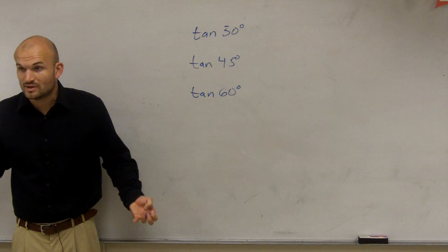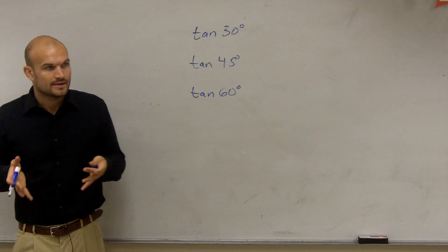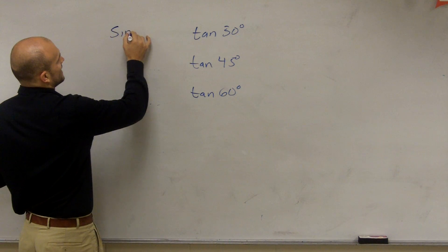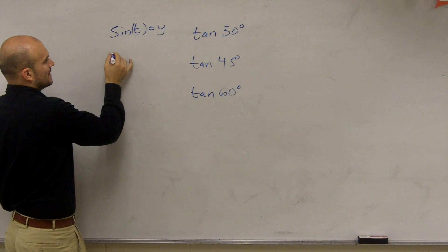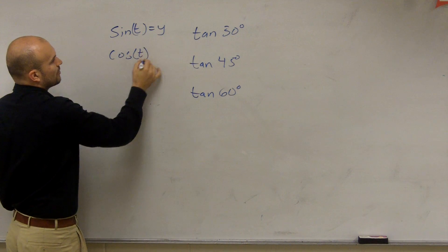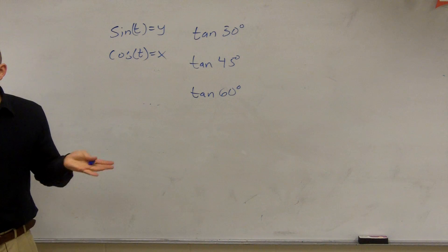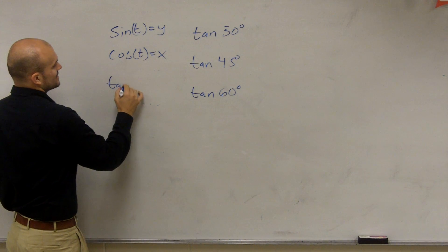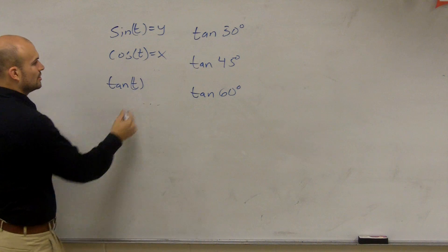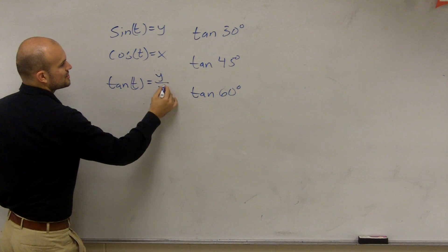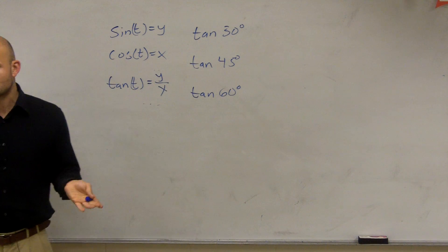Well, the first thing we need to do is we need to know exactly what the cosine is. Remember, when we're dealing with a point on the unit circle, the sine represents y, the cosine of your point on the unit circle represents the x-coordinate of your point, and the tangent of your angle at any point on the unit circle is going to represent the relationship of your y-coordinate over your x-coordinate.